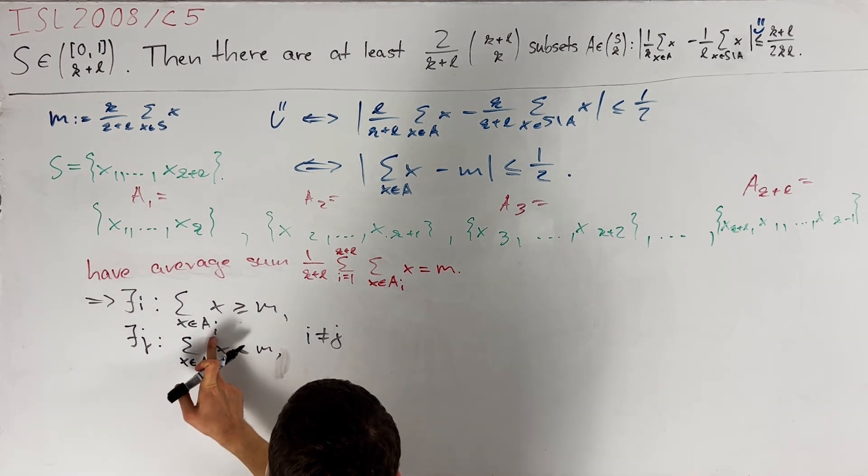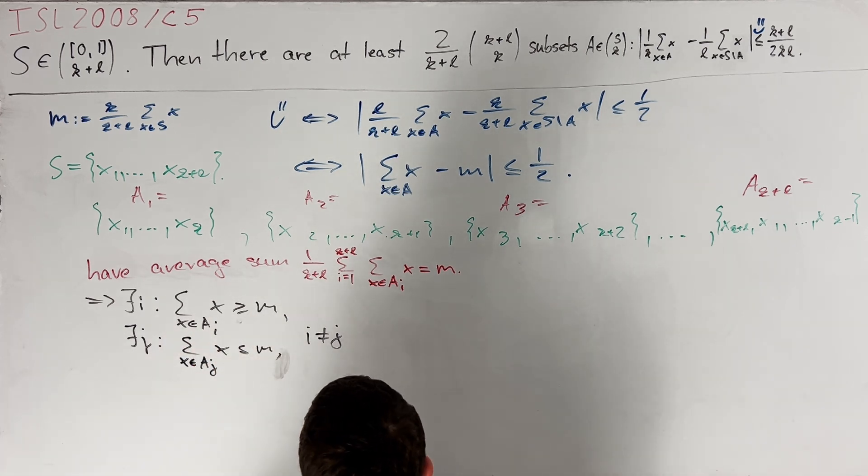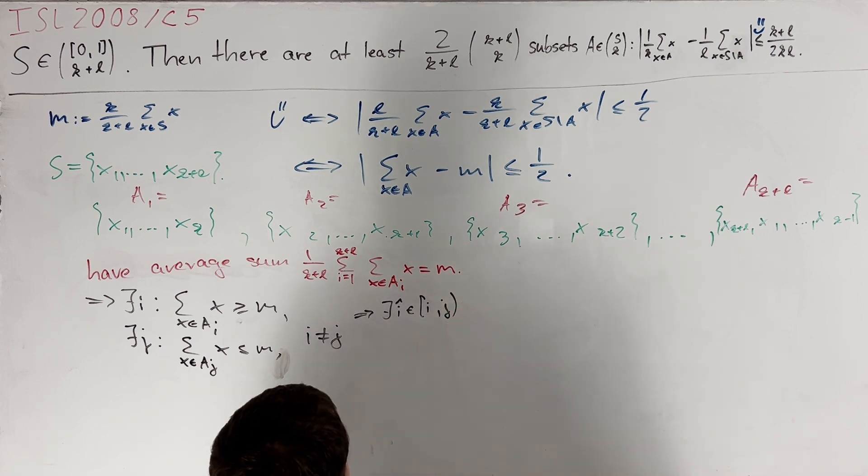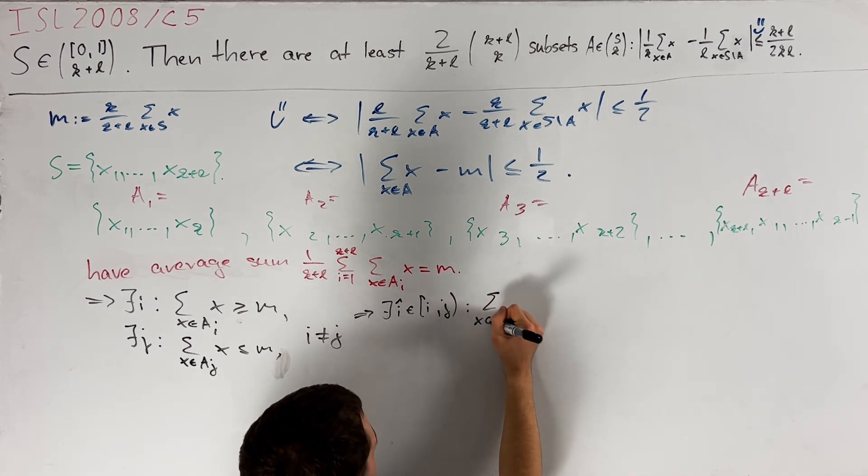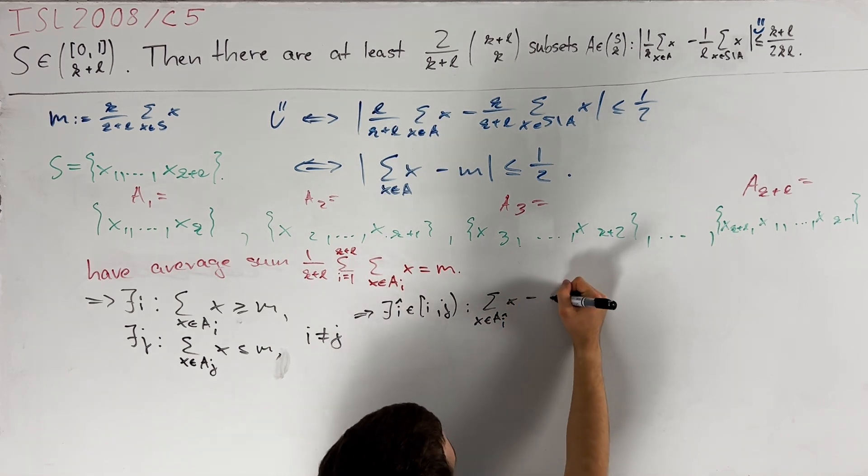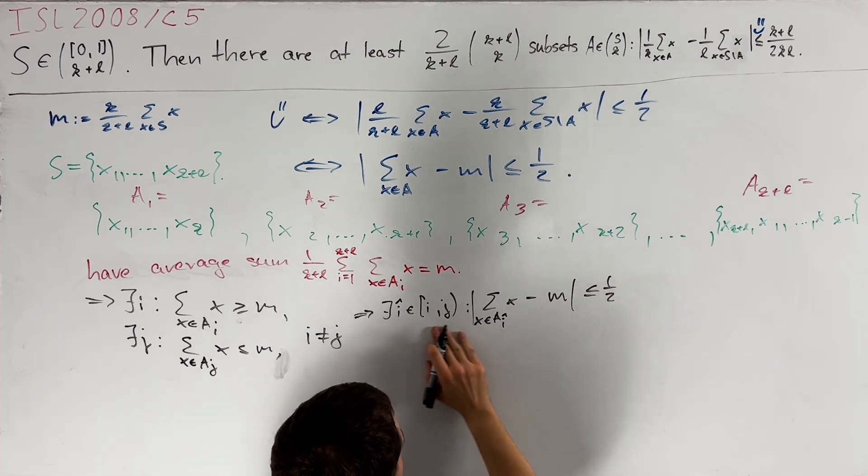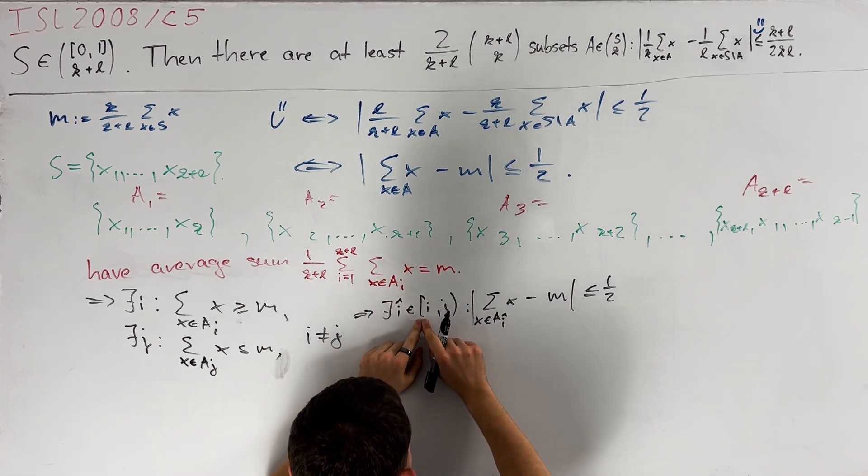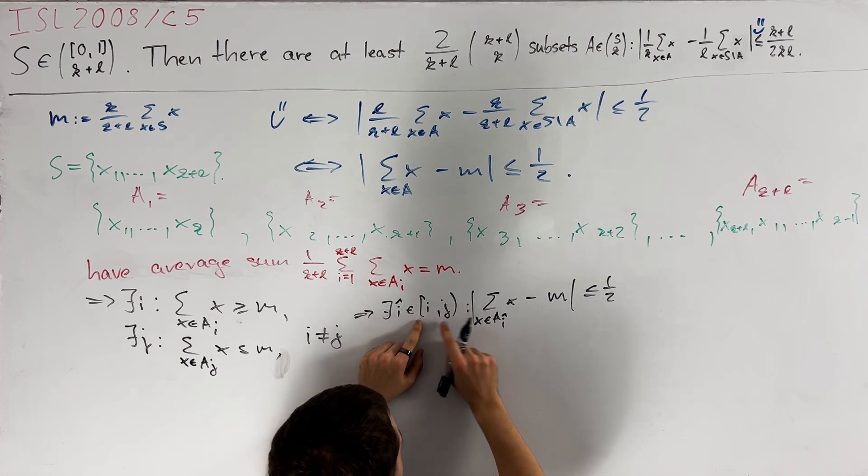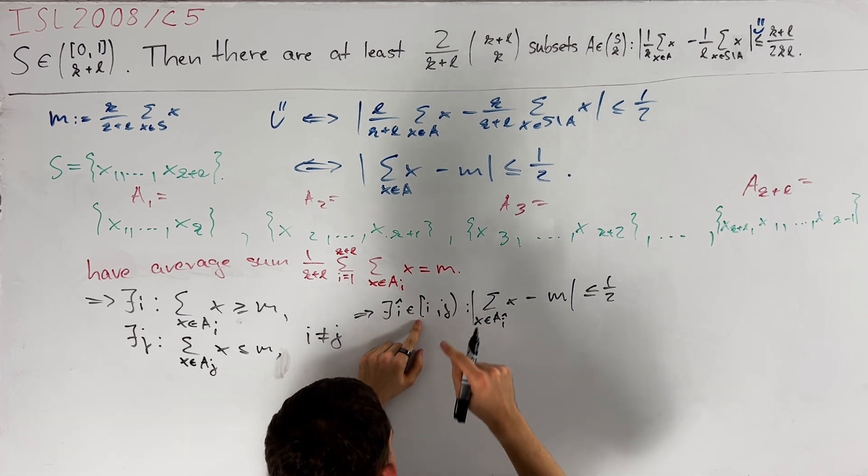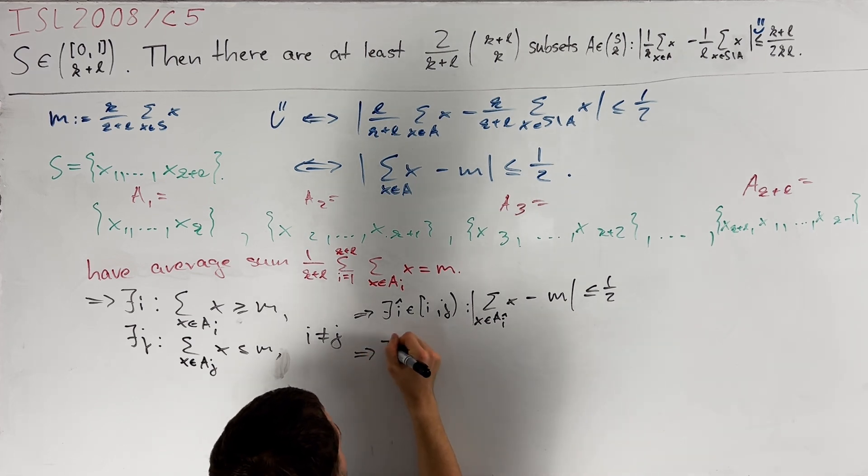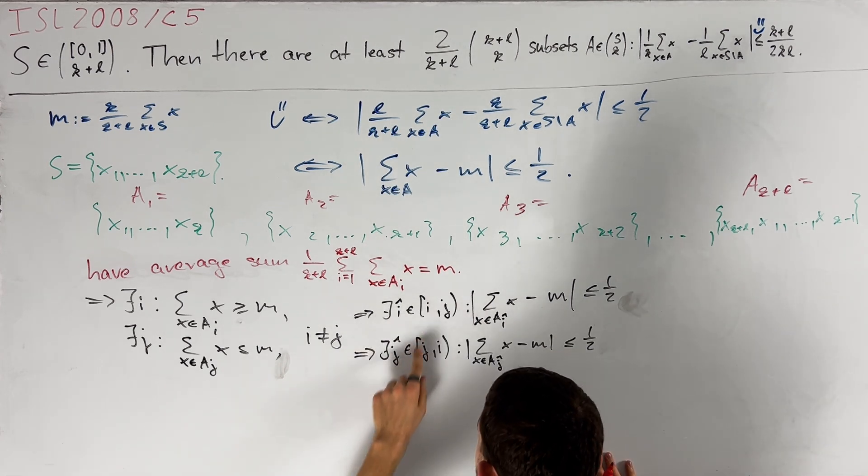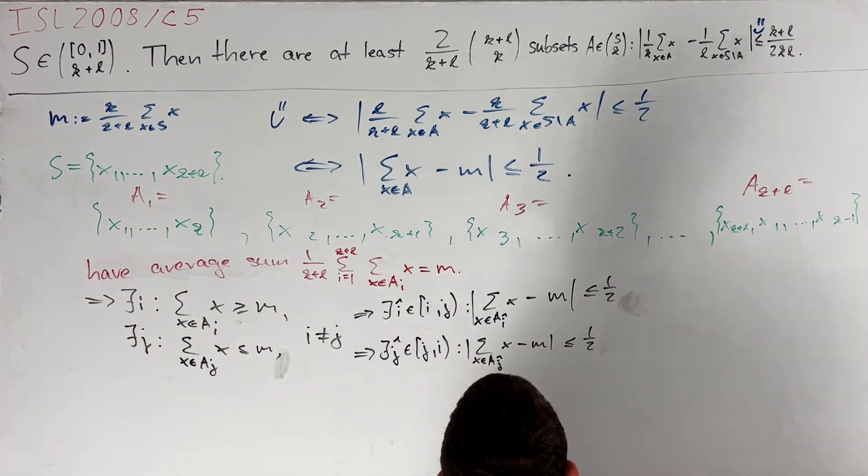Therefore, since incrementing I by 1 changes this sum by at most 1, we can deduce by a discrete intermediate value theorem that there exists some I hat in the interval starting at I up to J where this is open with the property that the sum of X in AI hat X minus M has absolute value at most a half. Here this is some notation I used to avoid these problems with cyclic indices. Similarly, we get a J hat in the interval from J up to I with the same property.